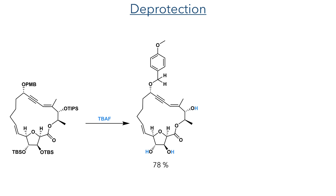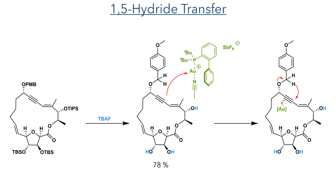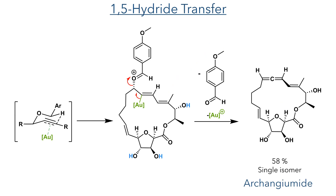With the macrocycle now formed, the silyl groups could be deprotected using TBAF, and a 1,5-hydride transfer could then be carried out. This reaction uses a cationic gold catalyst, which is a strong pi acid. This can coordinate to the alkyne, making it more electrophilic, and this promotes a 1,5-hydride transfer from the PMB group. This hydride transfer goes through a six-membered chair-like transition state and forms an intermediate bearing a carbon-gold bond. This then undergoes an elimination reaction, regenerating the catalyst and eliminating PMB aldehyde to form archanguamide in a 58% yield as a single isomer.